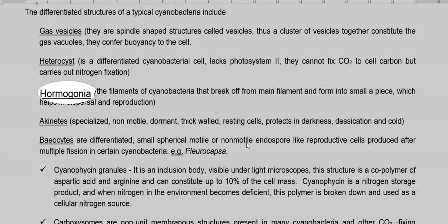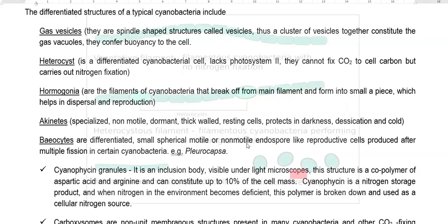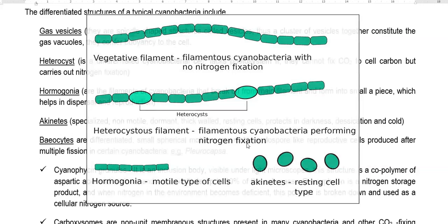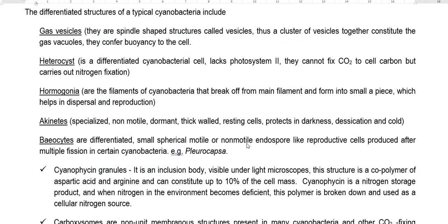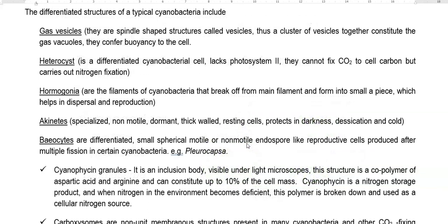Hormogonia are filaments of cyanobacteria that break off from the main filament into small pieces, mainly helping in reproduction through dispersal of cyanobacteria to different localities. Akinetes are specialized, non-motile, dormant, thick-walled resting cells that protect the organism under darkness, desiccation, and cold stress. Baeocytes are differentiated small, spherical, motile or non-motile endospore-like reproductive cells produced by multiple fission, with Pleurocapsa being an example of a baeocyte producer.